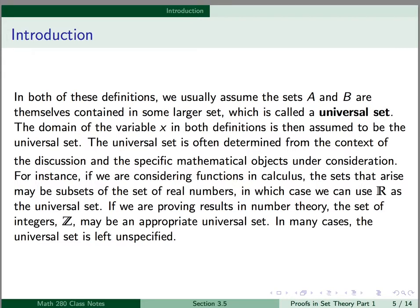The universal set is often determined from the context of the discussion and the specific mathematical objects under consideration. For instance, if we're considering functions in calculus, the sets that arise may be subsets of the set of real numbers, in which case we can use ℝ as the universal set. If we're proving results in number theory, the set of integers ℤ may be an appropriate universal set. In many cases, the universal set is left unspecified.